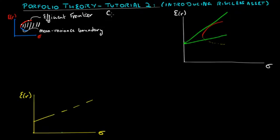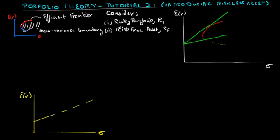Consider the following situation. We have a risky portfolio with return R1 and a risk-free asset with return RF. So if RP represents the return on a portfolio with position in both risky and risk-free assets, then RP equals alpha F, where alpha F is the proportion of risk-free asset in the portfolio.